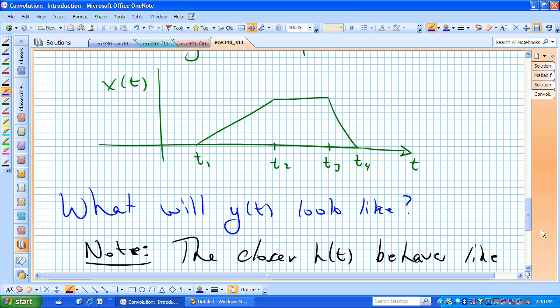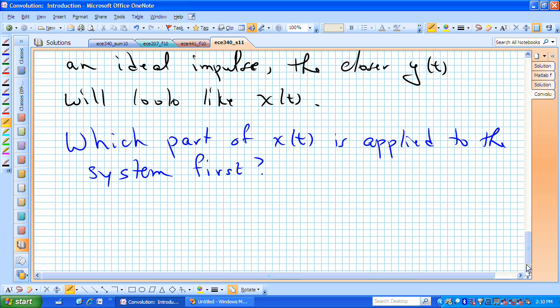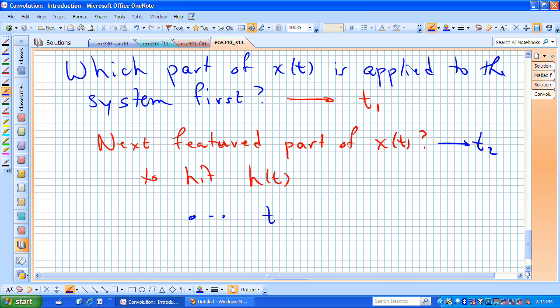I hope by looking at that you can see that this is the point in time and the shape of x of t that's going to hit the system first. That's occurring sooner in time. And for that reason, then, our answer to this question would be, well, that's just t sub 1. What about the next unique featured part of x of t will hit the system next? Next featured part of x of t to hit h of t. I hope you're starting to see that that's now what we labeled t sub 2, and that pattern just continues. Then t sub 3, then t sub 4. And that's important.